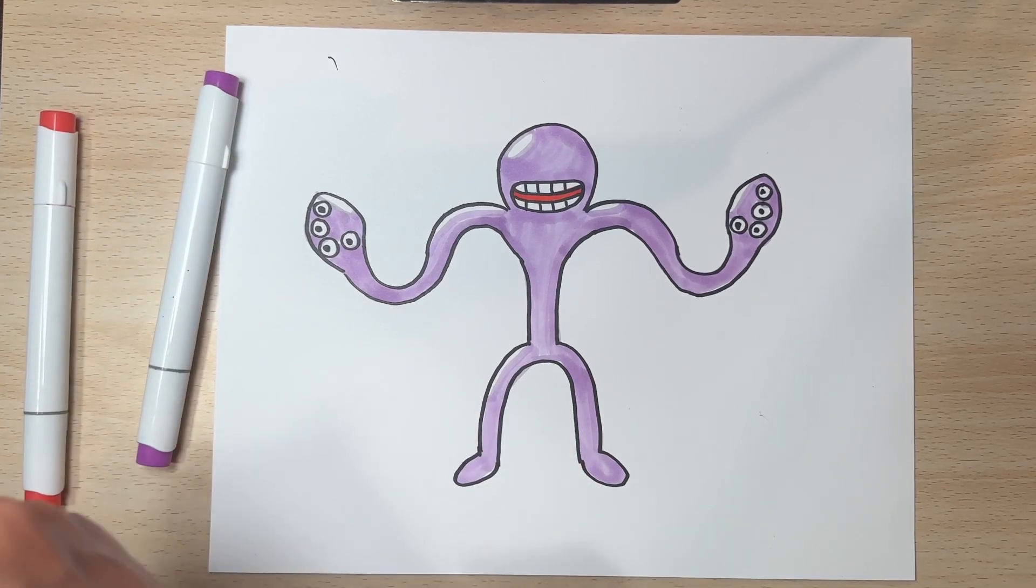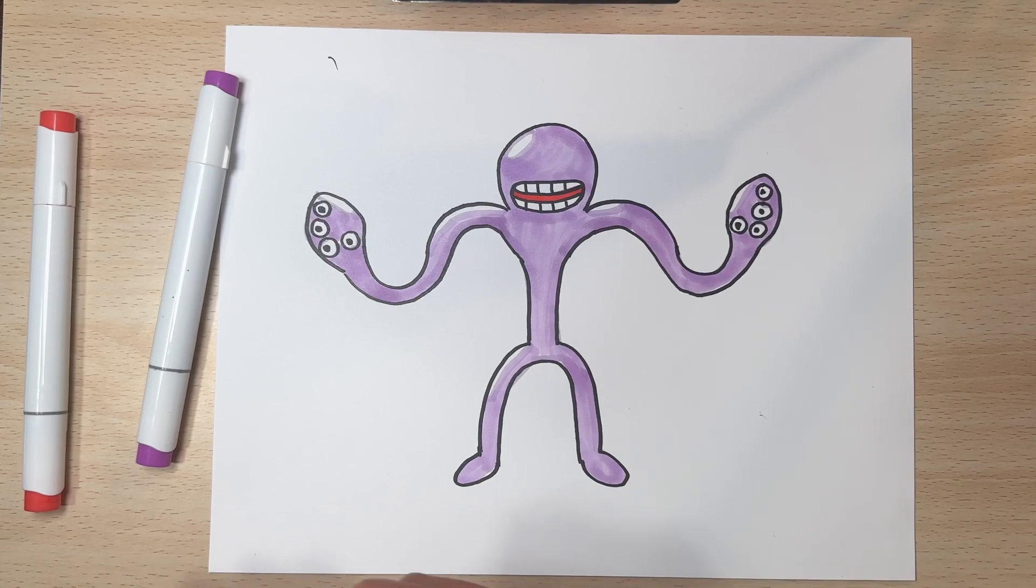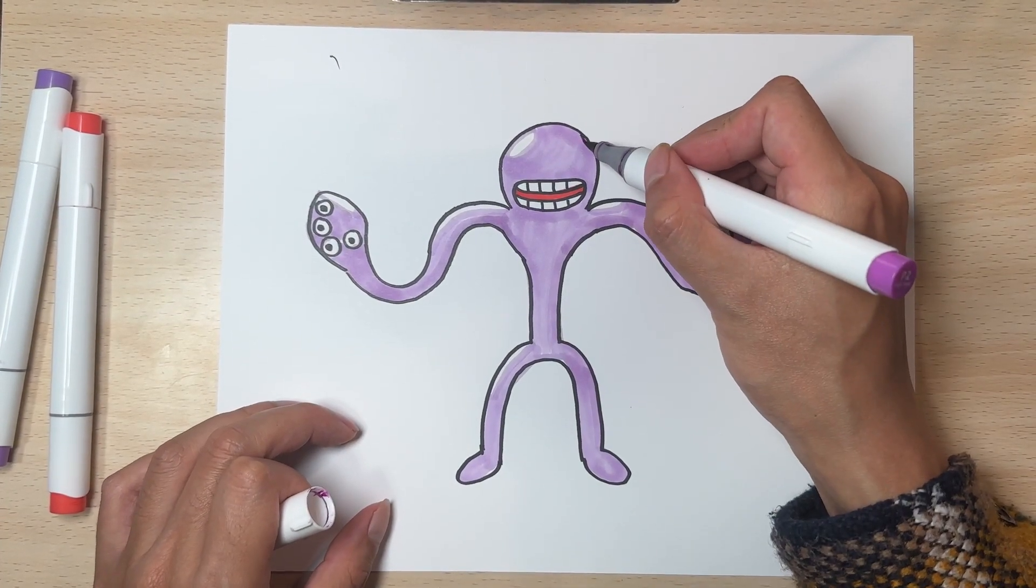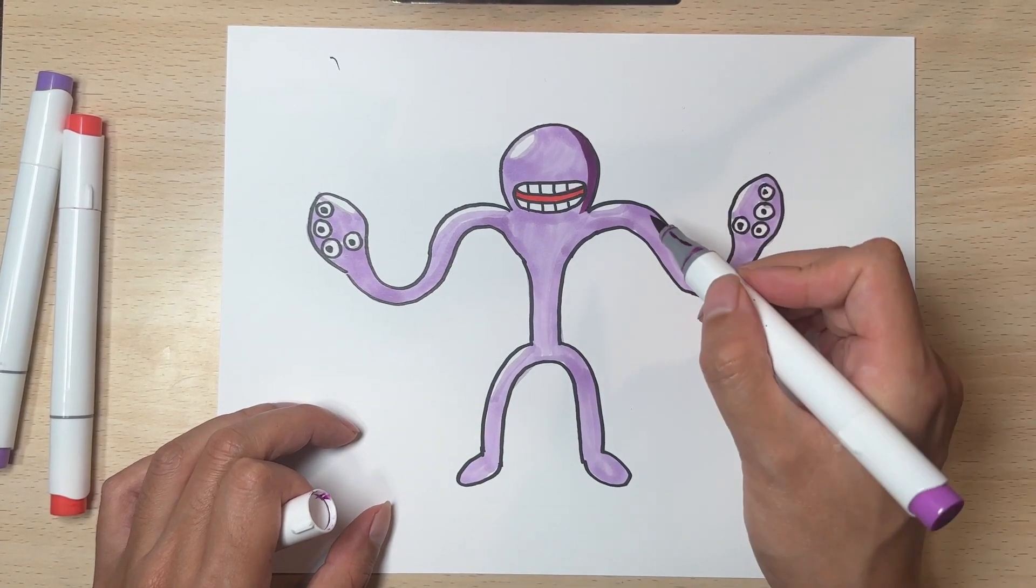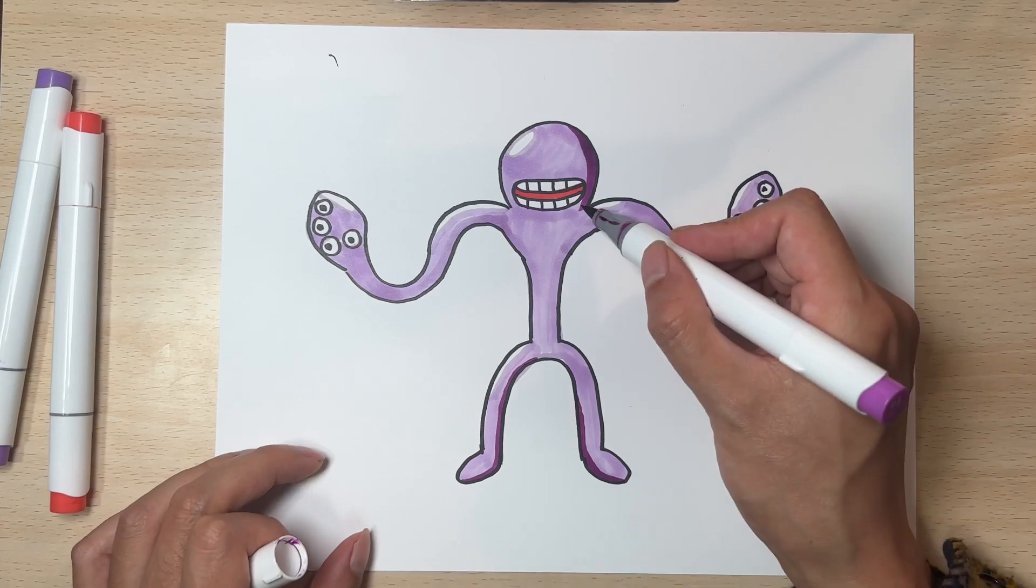And let's do a dark purple for the shadows. Let's see where we can add this. Just lightly on the side of the head, a nice deep shadow. This one's a little bit dark so I'll use it sparingly.